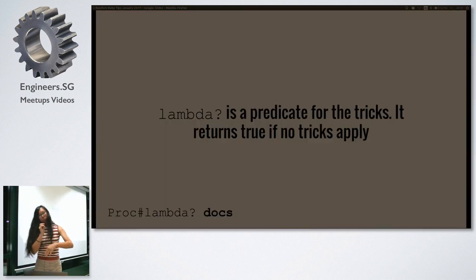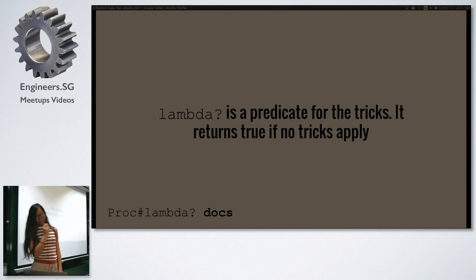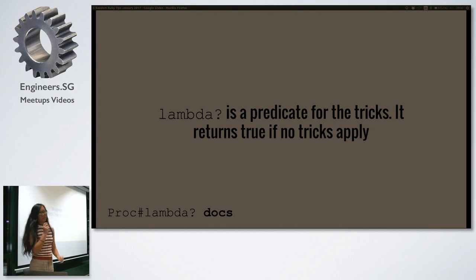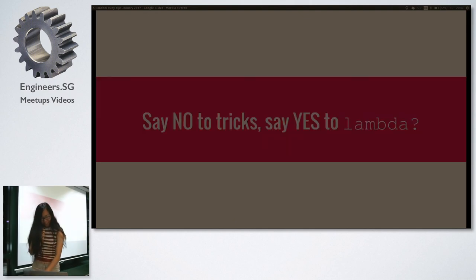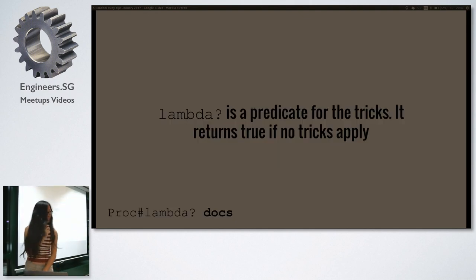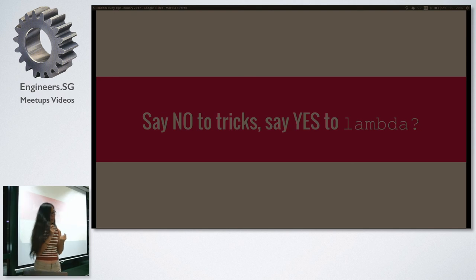The docs say that the lambda? predicate method is a predicate for what they call the tricks. It returns true if no tricks apply. So what are these tricks? And let me reiterate: these tricks are not good. You should just be using lambdas instead of procs.